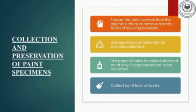These are some points on how the collection and preservation of paint specimens is done. Scrape the paint sample from the original surface or remove already fallen chips using tweezers. Use separate containers for all samples collected. Use paper binders to collect pieces of paint only if large pieces are to be collected. Collect paint from all layers.